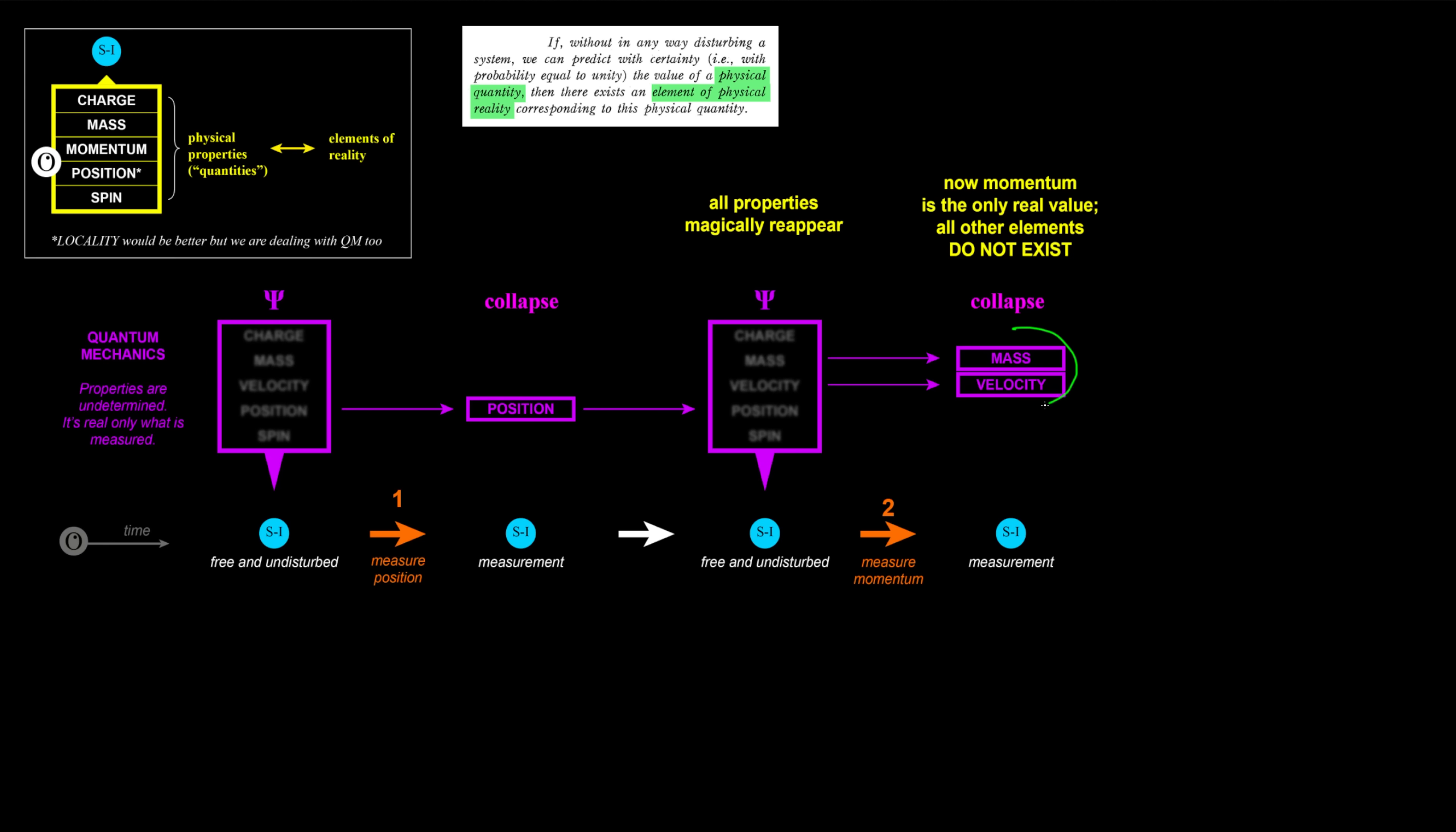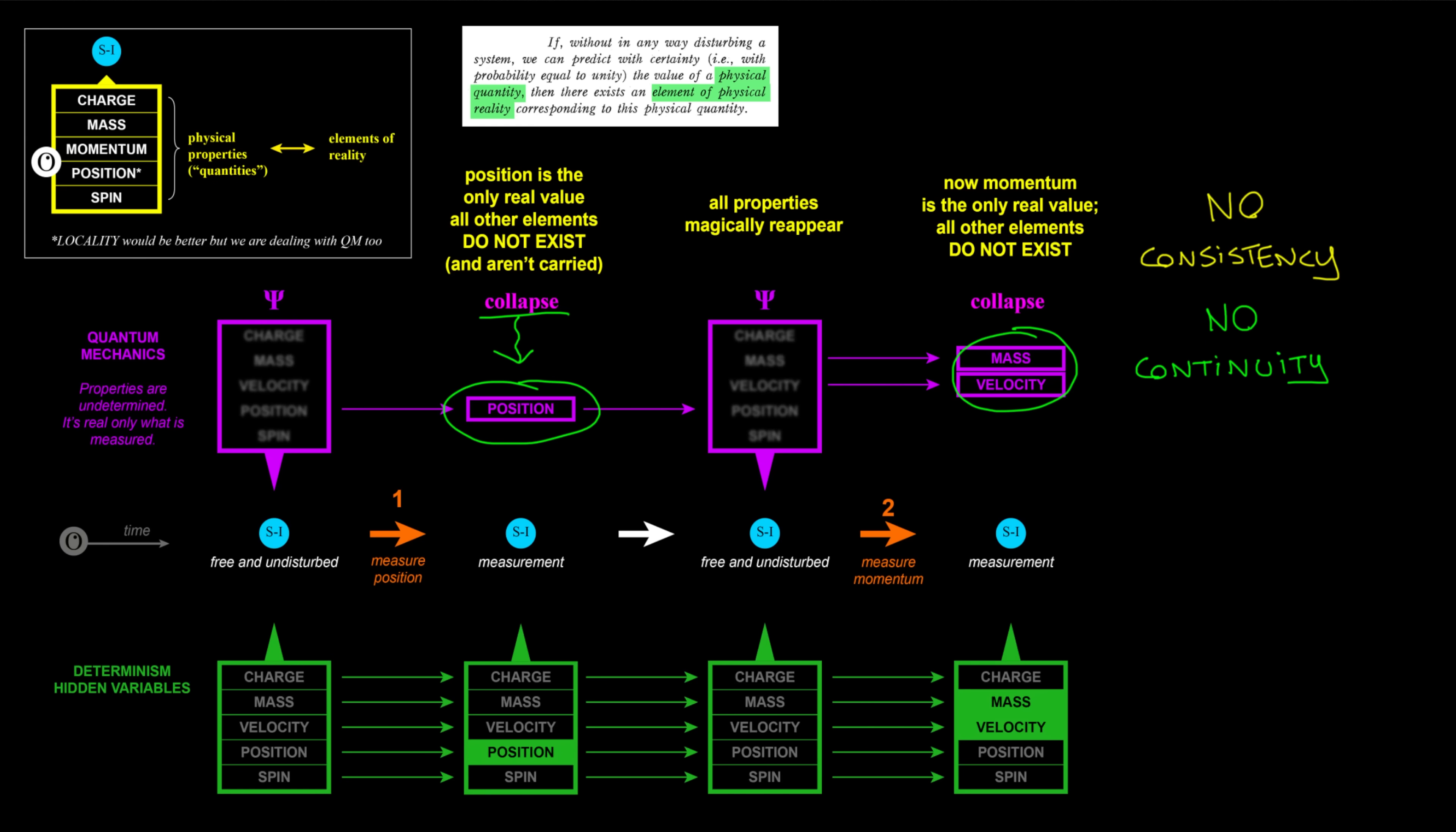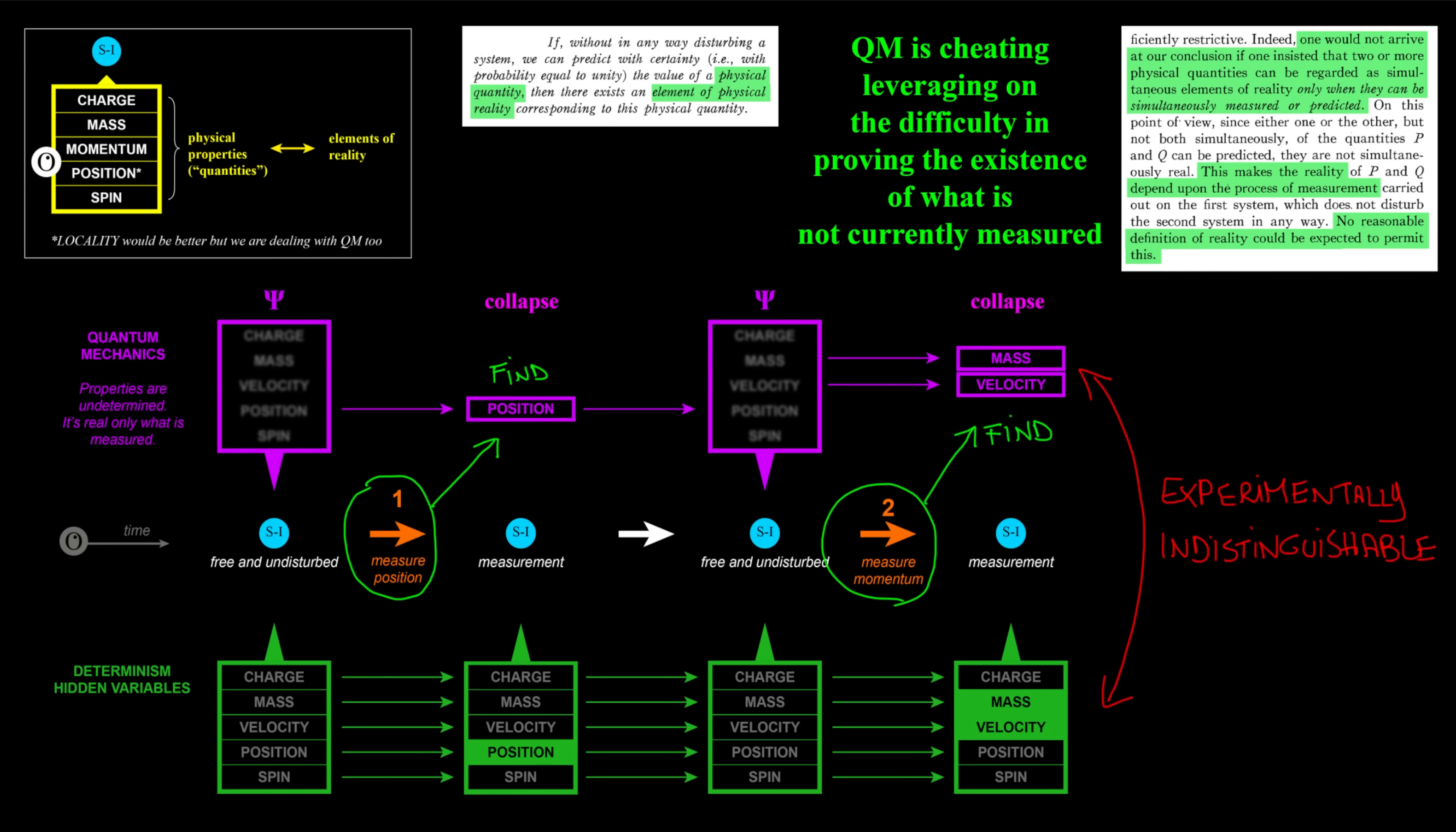How can I measure mass here if position made all other values disappear with the collapse? Quantum models have no consistency or continuity, and they are just counterfeiting determinism. When I look for position I find position, and when I look for momentum I find momentum. Indeed, these two models are indistinguishable at the experimental level. But it's pretty clear that quantum mechanics is cheating and leveraging on difficulty improving the existence of what is not currently measured.